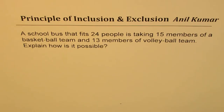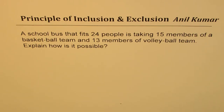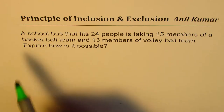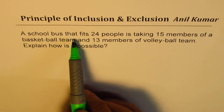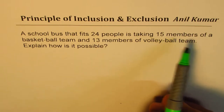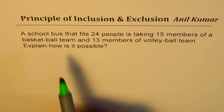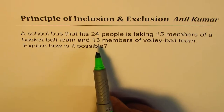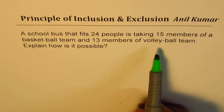I'm Anil Kumar and in this series we are going to apply the principle of inclusion and exclusion for counting purposes. I've taken a very simple example to begin with. The example here is a school bus that fits 24 people is taking 15 members of a basketball team and 13 members of a volleyball team.